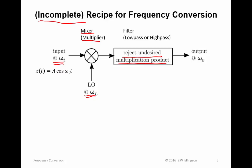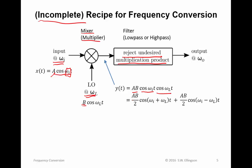To demonstrate: the simplest input signal is A·cos(ω_i·t) multiplied by B·cos(ω_L·t). When we multiply those together we get AB·cos(ω_i·t)·cos(ω_L·t), which by the relevant trigonometric identity gives two terms: cosine of the sum of frequencies and cosine of the difference of frequencies. Finally, we apply a filter — normally either low pass or high pass — whichever is required to eliminate whichever of these two terms we do not want. We keep one and try to reject the other.